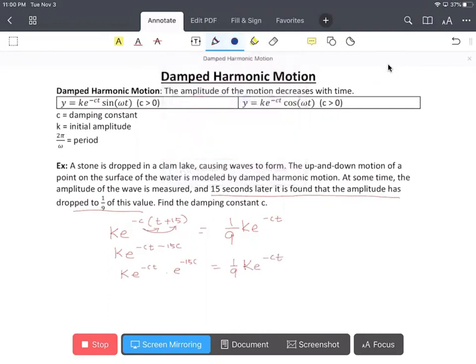And we can divide both sides by k and that goes away. Divide both sides by e raised to negative ct and that goes away.